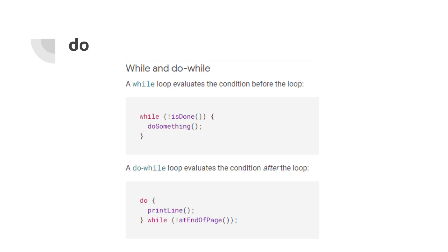The 'do' keyword is used with while loops. With a regular while loop, the condition is evaluated at the top. With a do-while loop, the condition is evaluated after the loop — first we do something and then check the while condition. In some situations you have to execute a statement at least once and then loop, and do-while is useful for that.